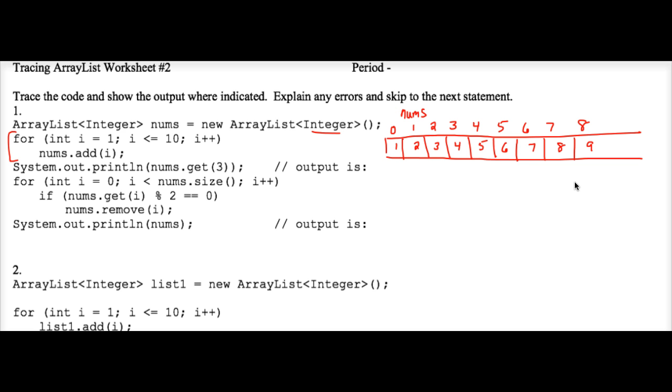Eventually, i ends up getting to the number 8. And when i is 8, 8 gets added in to position 7. Then i jumps up to 9 because of plus plus. And since 9 is less than or equal to 10, the 9 does get added on to the end of the ArrayList.